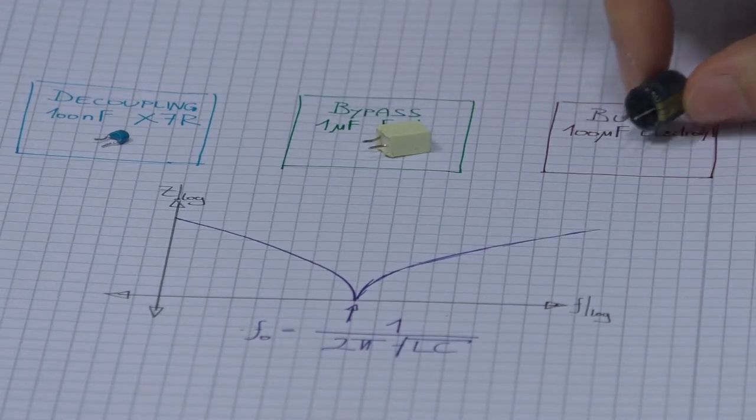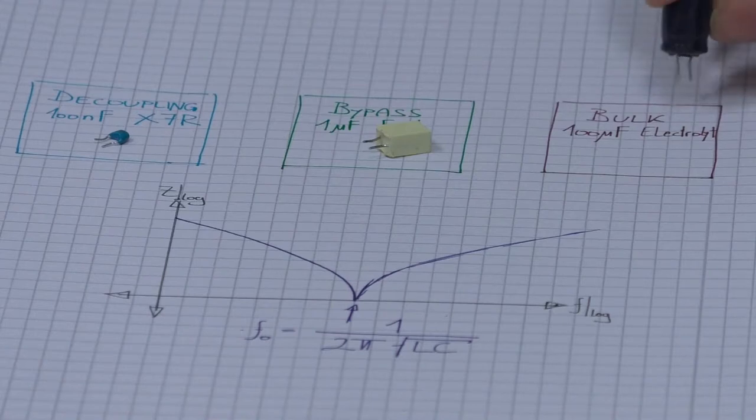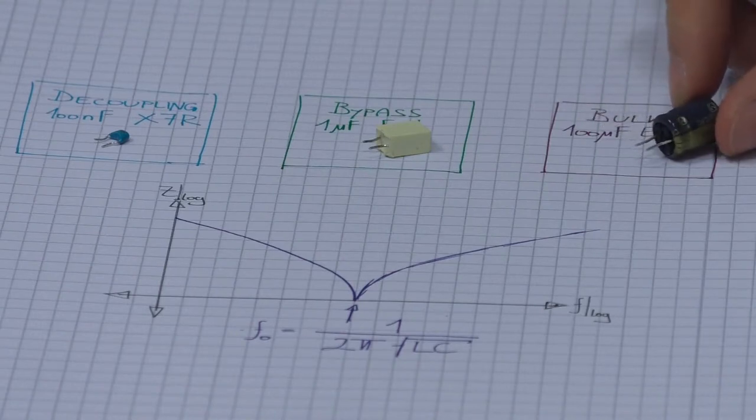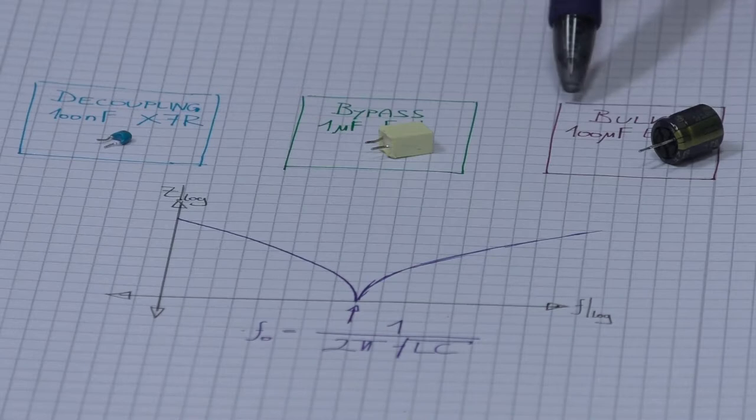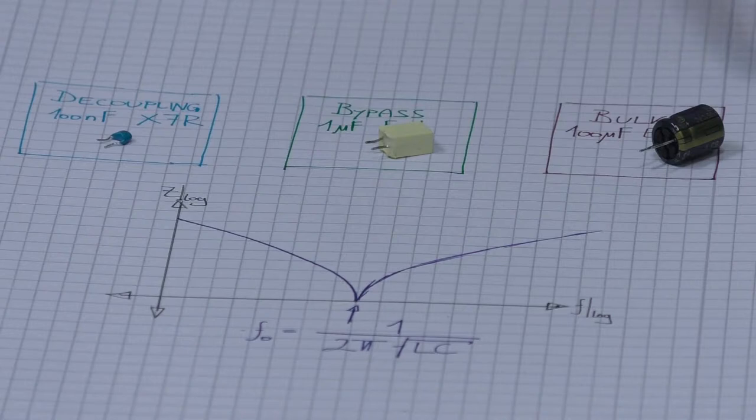And last but not least we have here an electrolytic capacitor. So those have really high capacitances. So this one here has 100µF. And those bulk capacitors are used to maintain a constant DC voltage and current for our components.